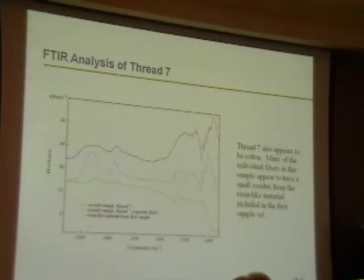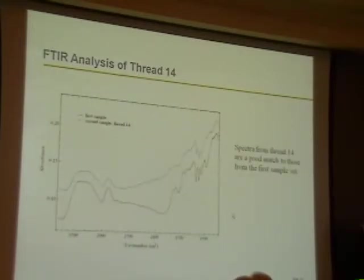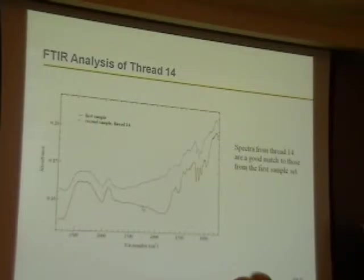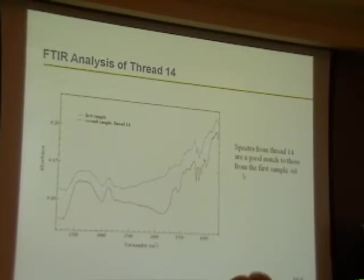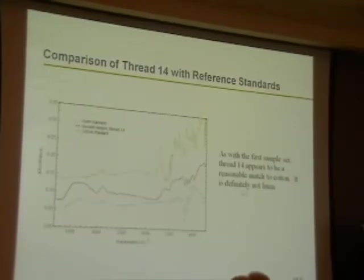Many of the individual fibers in thread seven appear to have a small residue from the resin-like material included in the first sample set, so it was contaminated with that bit of residue. Now thread number fourteen: the first sample was cotton, and the second sample is thread number fourteen, and they're very similar. Spectra from thread number fourteen are a good match for the first sample set, and both were concluded to be cotton.